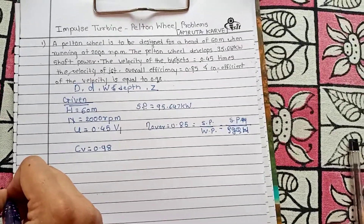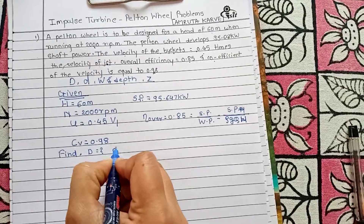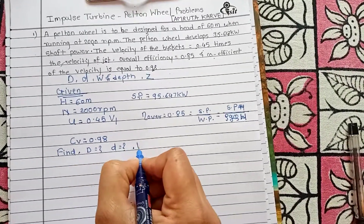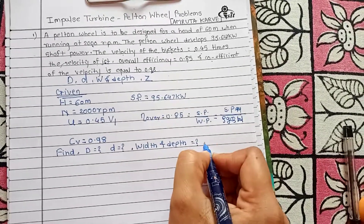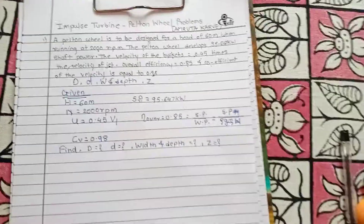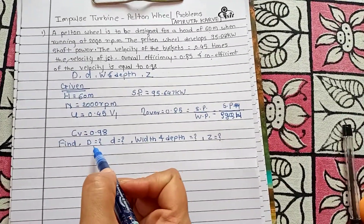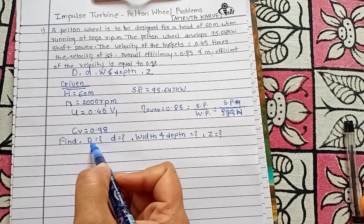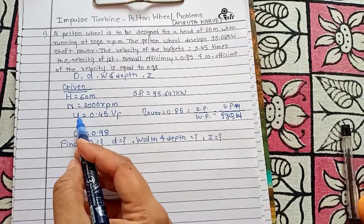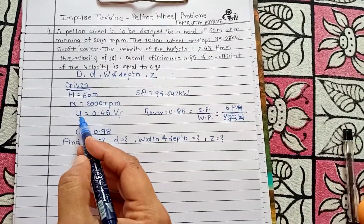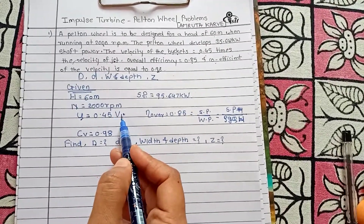Now let's go step by step. To find the runner diameter D, it appears in the formula u = πDN/60. We need u, which comes from V1 via u = 0.45 × V1. And V1 is found using Cv. So our first step is to find V1, then u, then D.